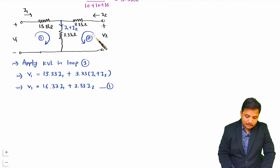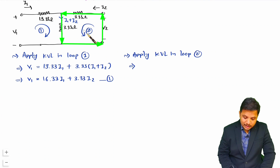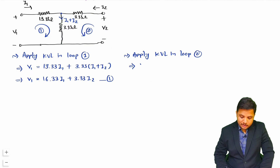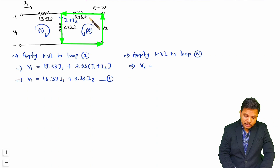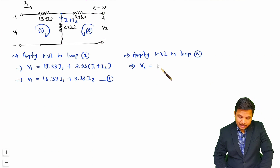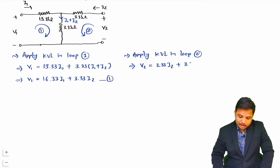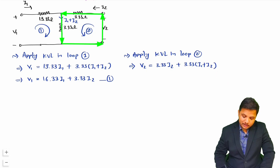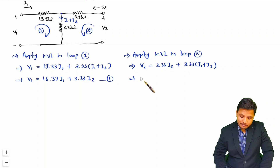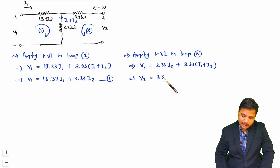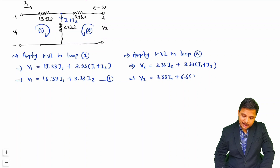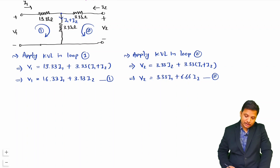Now considering the second loop for the second equation: V2 appears from minus to plus. Through the 3.33-ohm output resistor current is I2, giving 3.33·I2, plus through the 3.33-ohm shunt resistor current is I1 + I2, giving 3.33·(I1 + I2). Simplifying: V2 = 3.33·I1 + (3.33 + 3.33)·I2 = 3.33·I1 + 6.66·I2. This is equation 2.